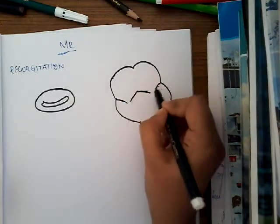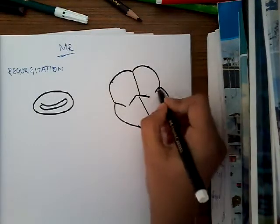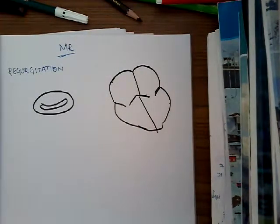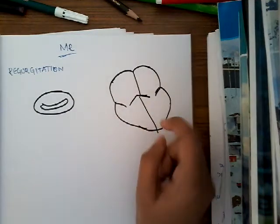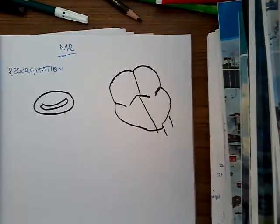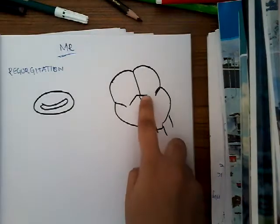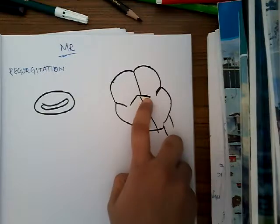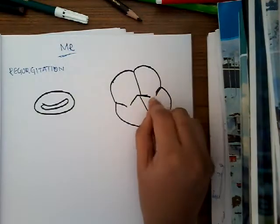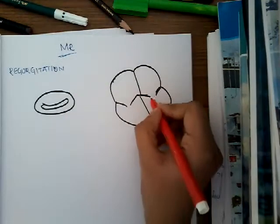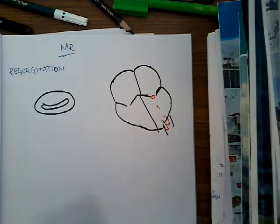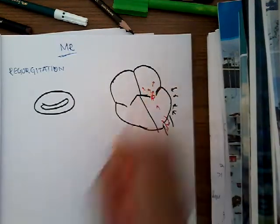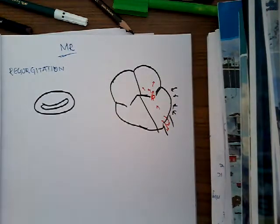Let us now consider the mitral valve. Normally, during ventricular diastole, blood from the atria moves to the ventricle. During ventricular systole, when the ventricle contracts, blood moves out into the aorta. However, in mitral regurgitation there is improper closure of the mitral valve, leaving a small space. Because of this, when the ventricle contracts it not only empties blood into the aorta but also sends some blood back into the left atrium — this is what happens in mitral regurgitation.